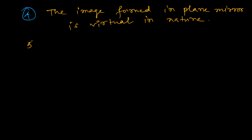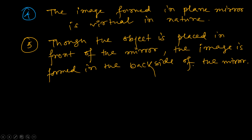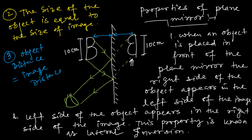The fifth property: although the object is placed in front of the mirror, the image is formed in the back side of the mirror. Whenever we watch through the reflected rays, the light rays appear to meet in the back side of the mirror. The reflected rays do not actually meet, but they appear to meet in the back side when we look through them.